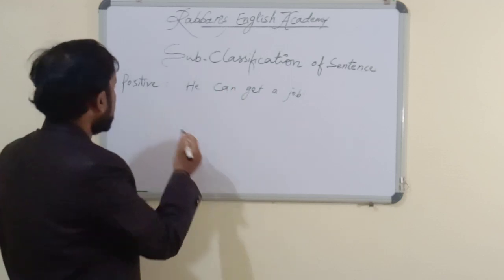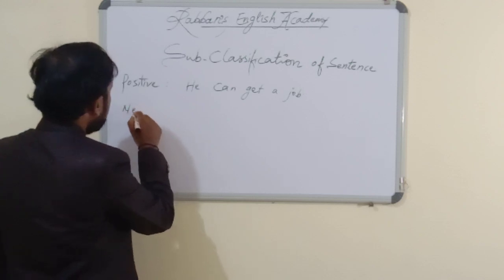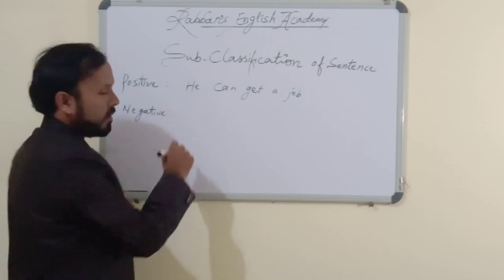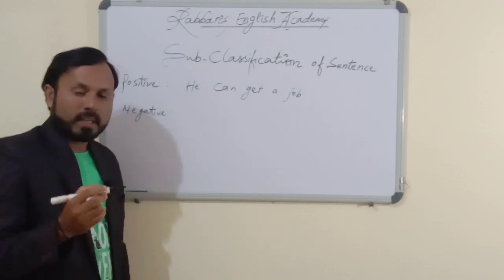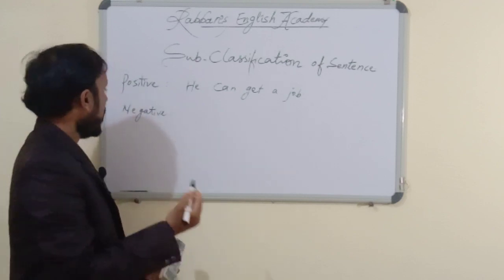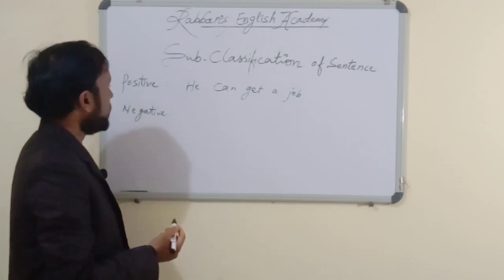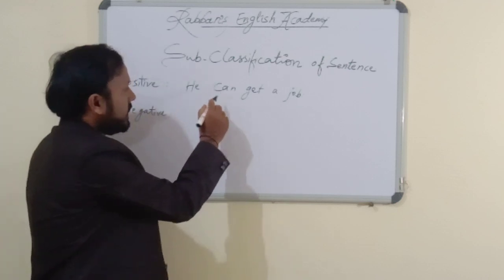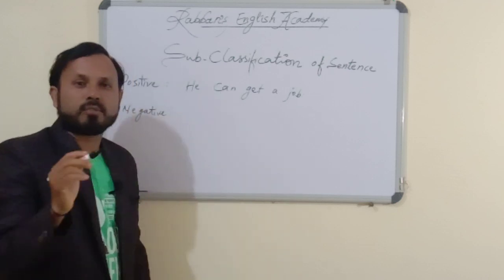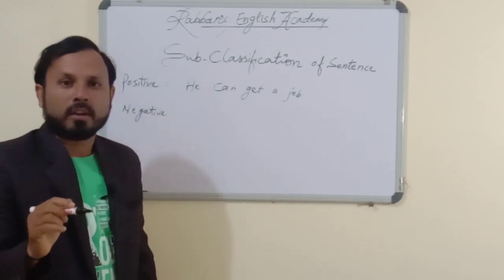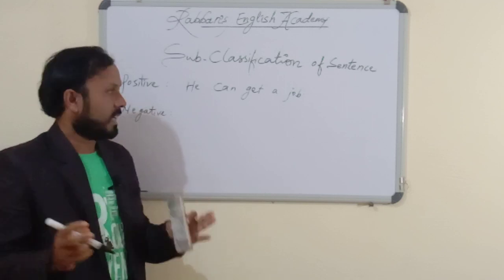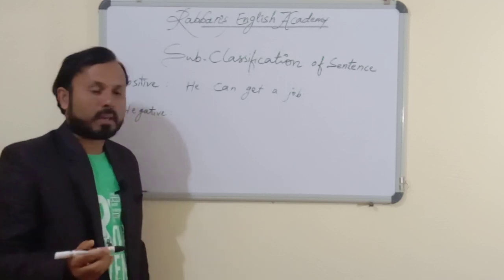Now negative. How to make a negative sentence? Very simple, very easy. How to make negative? After auxiliary, you have to put 'not.' The sentence will become negative. The auxiliaries — what are the auxiliaries?